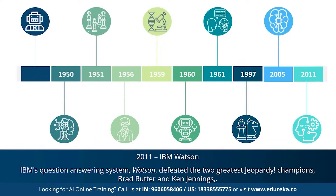Since the emergence of artificial intelligence in the 1950s, we have seen exponential growth in its potential. AI covers domains such as machine learning, deep learning, neural networks, natural language processing, knowledge bases, expert systems, and so on.